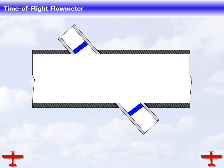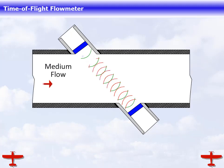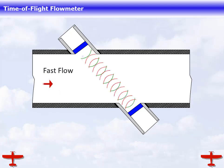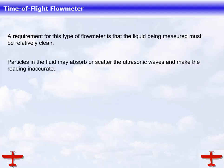Watch as we show slow flow, medium flow, and fast flow. A requirement for this type of flow meter is that the liquid being measured must be relatively clean. Particles in the fluid may absorb or scatter the ultrasonic waves and make the reading inaccurate.